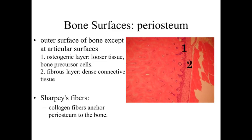The articular surfaces are where two bone structures come together within a joint cavity, allowing them to move in relationship to one another. We're going to have hyaline cartilage on the articular surfaces because we need those properties for smooth movement of the bone within the joint.